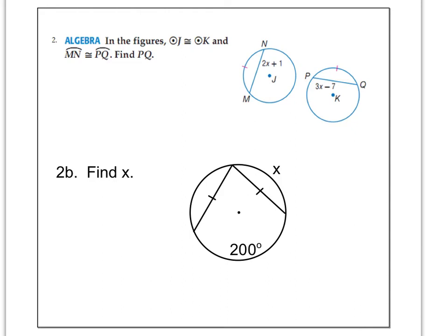Number two, in the figures, circle J is congruent to circle K and arc MN is congruent to arc PQ, find PQ. What that means is we want the distance from P to Q, which is this segment.